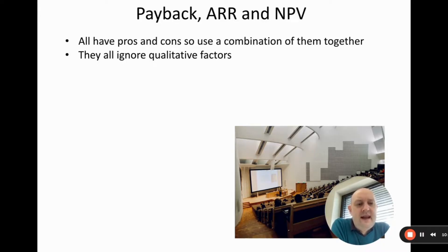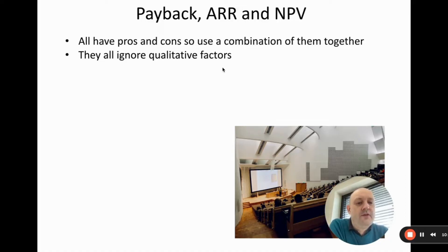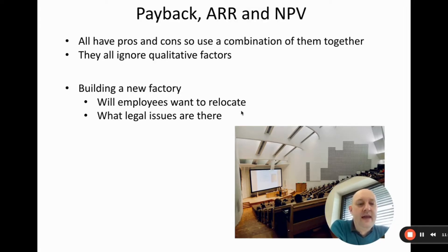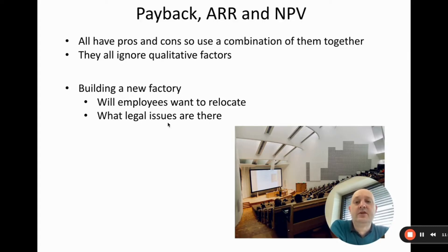Another issue is that all three methods ignore qualitative factors — non-numerical factors that don't involve numbers. For example, if we're evaluating whether to build a new factory, we could do payback, ARR, and NPV, but we also need to consider things like: will our employees want to relocate? If they don't, we'll need to hire new people — and can we find enough workers in the new location? Legal issues are another thing to consider.